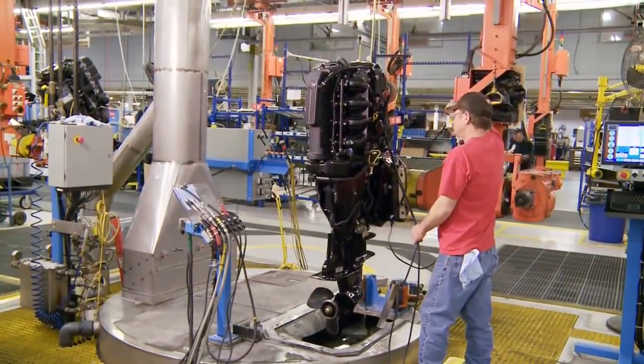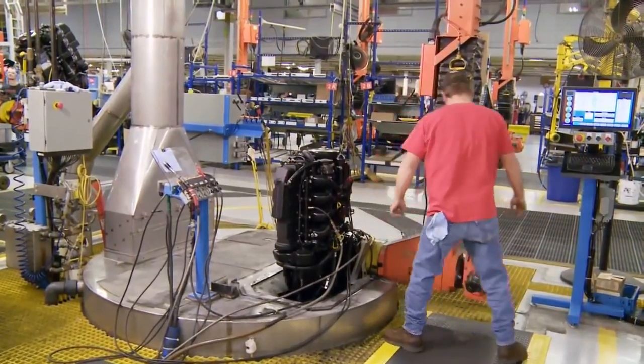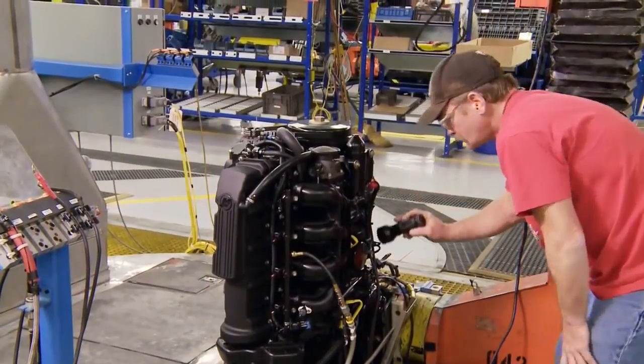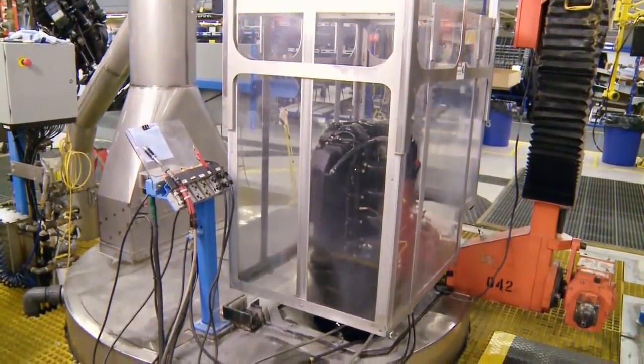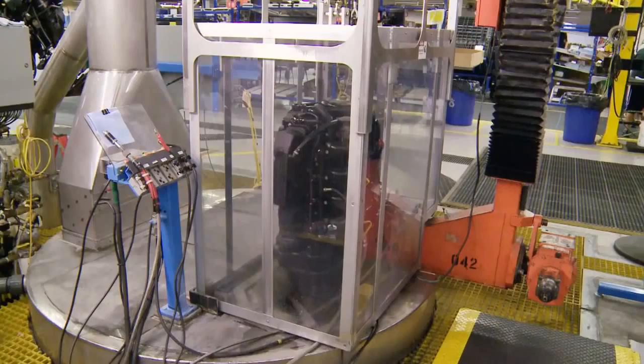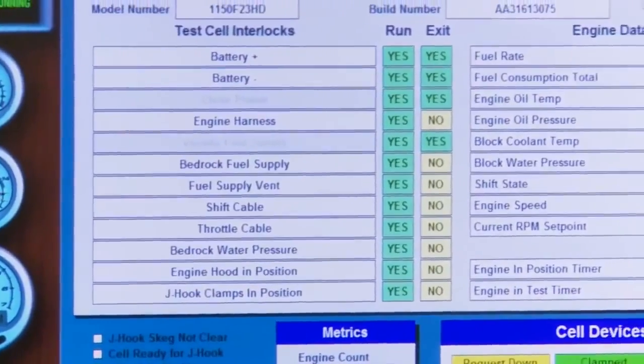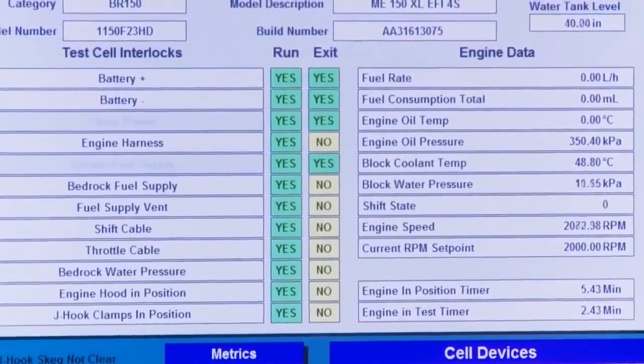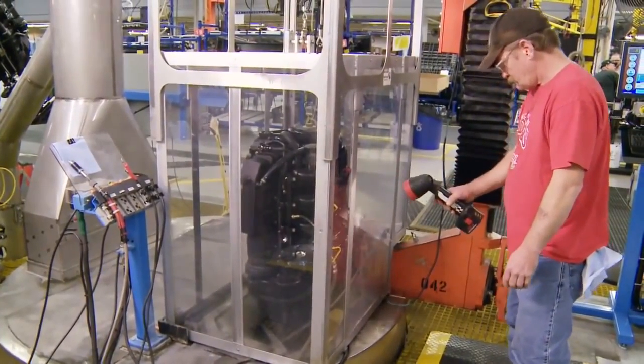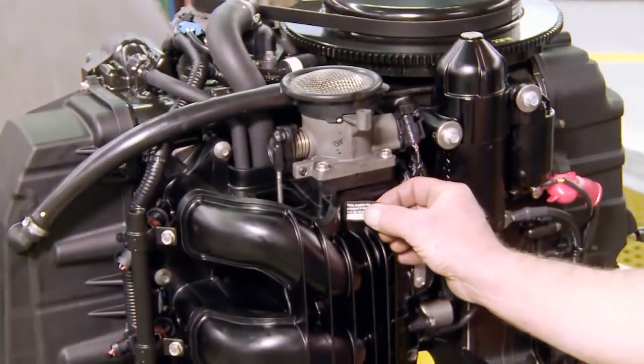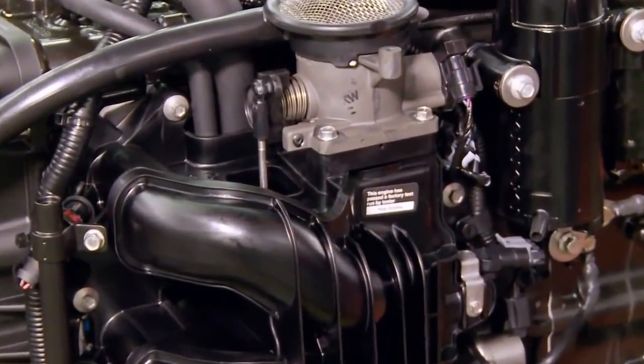But before it ships, Mercury tests the engine one last time in a water-filled tank to confirm that all components perform flawlessly. Every Verado engine is run at various RPMs during an eight-and-a-half-minute test cycle that measures power output, all fluid pressures, component temperatures, engine and electronic sensors, and noise and vibration. Every outboard Mercury manufactures is similarly tested. Mercury considers this a final opportunity to be certain your outboard will be the most durable and reliable you will ever own.